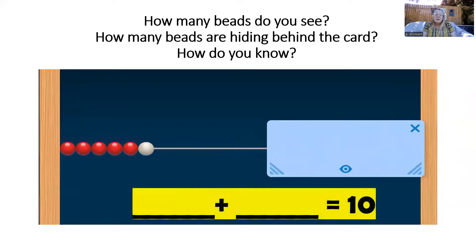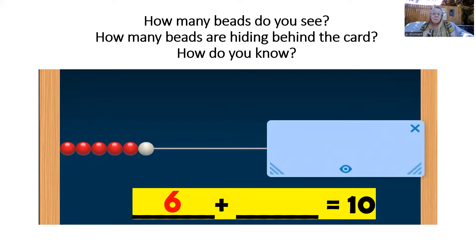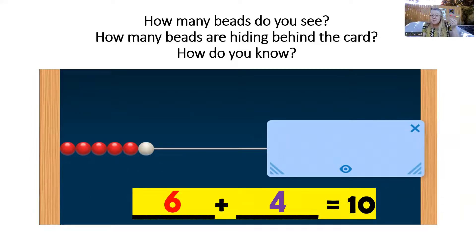How many beads do you see now? Make that on your number rack. Six beads. So if there are six beads in the picture, how many beads are hiding behind the card? Four. Let's read that equation together: six plus four equals 10. Nice job.